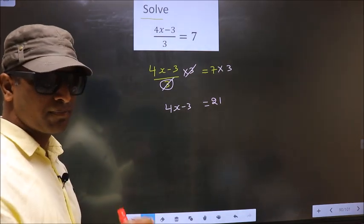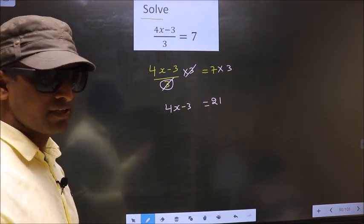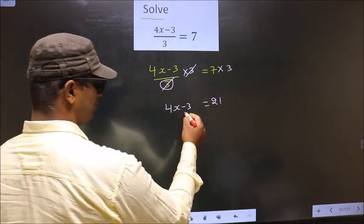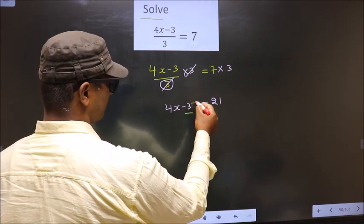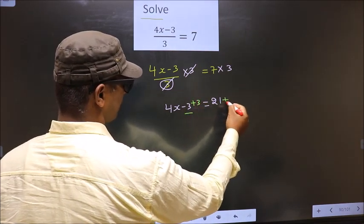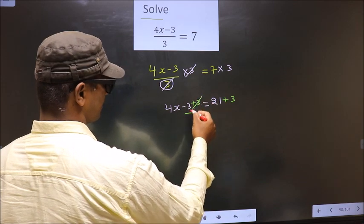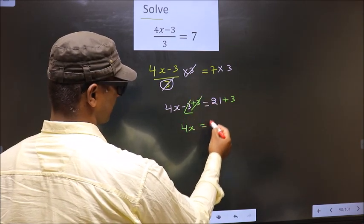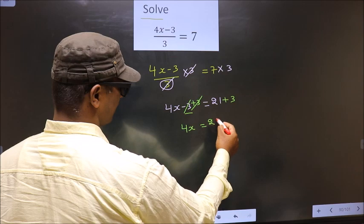Now you should make x the subject. For that, first you should remove minus 3. To remove minus 3, you add 3 on both sides. So now this cancels out, you get 4x equal to 21 plus 3, which is 24.